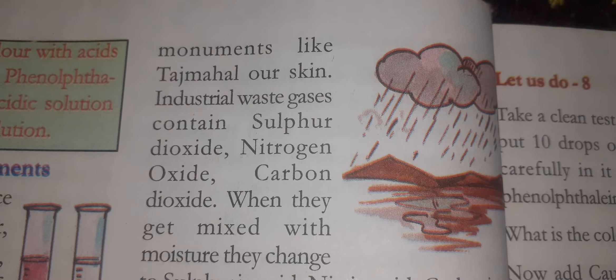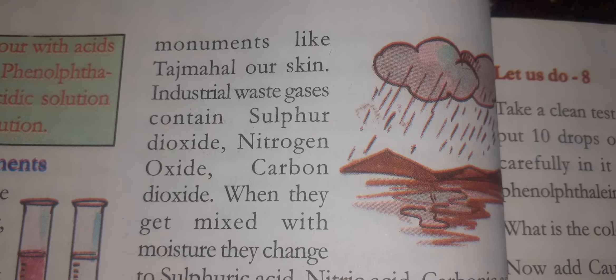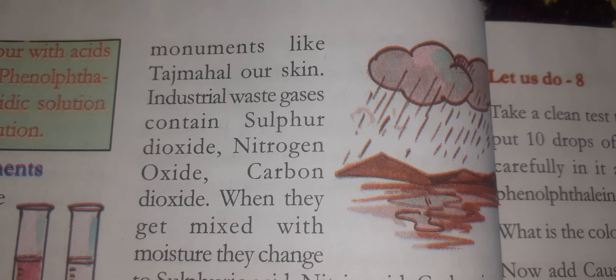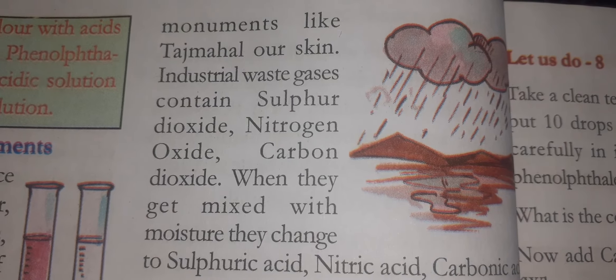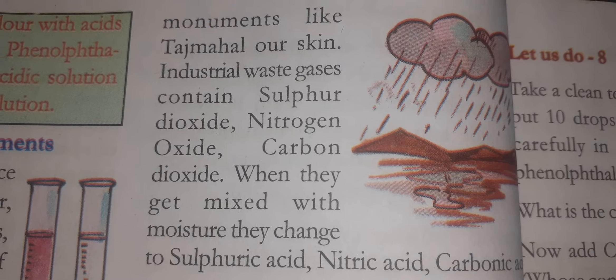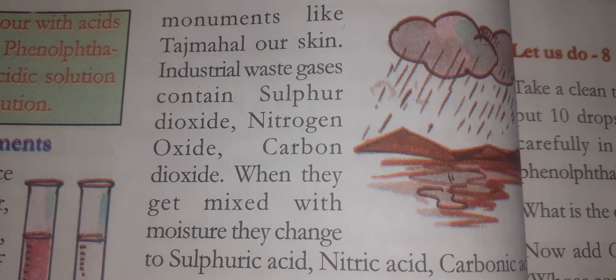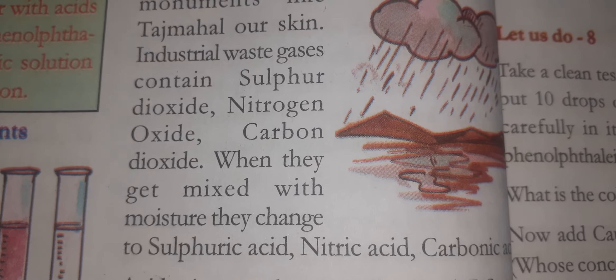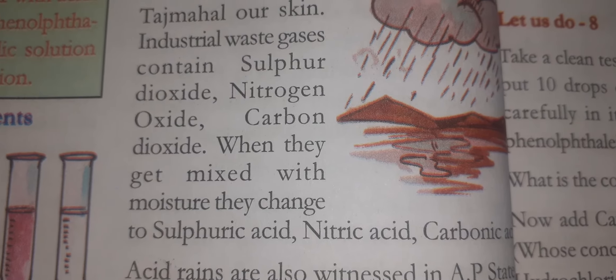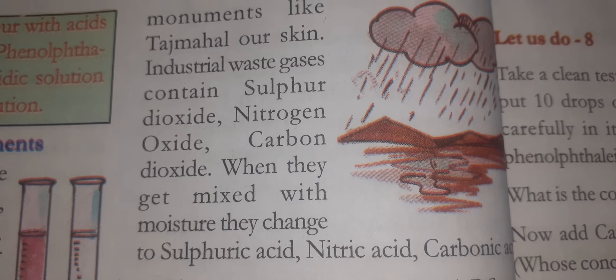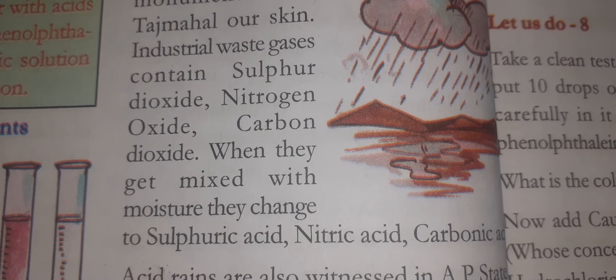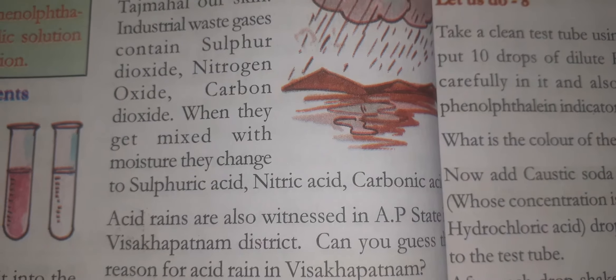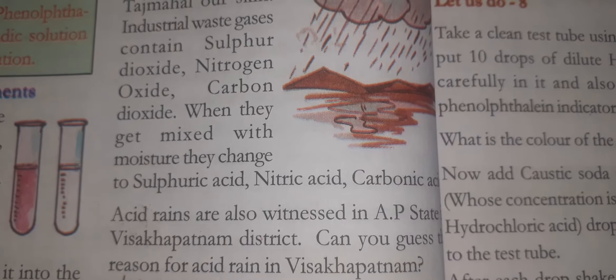Industrial waste gases come from industries — for example, sulfur dioxide, nitrogen oxide, and carbon dioxide. When these gases are mixed with moisture in the atmosphere, they change into sulfuric acid, nitric acid, and carbonic acid. These are what we call acid rains.